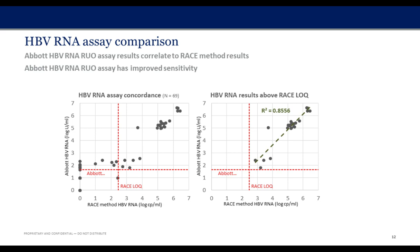This slide shows a small study comparing the relative performance of the Abbott RNA assay to the RACE method. Where both assays were detectable and quantifiable, the correlation was excellent. At the low end there was a slight deviation, likely attributable to imprecision in the manual method versus an automated one. On the left-hand side, the Abbott method is considerably more sensitive than the RACE method, and many samples undetectable by the RACE method were still detectable and quantifiable by the Abbott RNA assay.